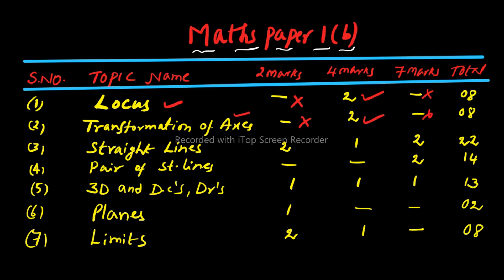Next topic is Transformation of Axes — no 2 marks, 2 four-mark questions, no 7 marks — giving 8 marks weightage. Then Straight Lines, one of the major topics in Maths 1B: 2 two-mark, 1 four-mark, and 2 seven-mark questions, totalling 22 marks weightage. Pair of Straight Lines: no 2 marks, no 4 marks, only 2 seven-mark questions — 14 marks weightage. 3D and Direction Cosines/Direction Ratios together: 1 two-mark, 1 four-mark, 1 seven-mark — totalling 13 marks. Planes: just 1 two-mark question, 2 marks weightage.